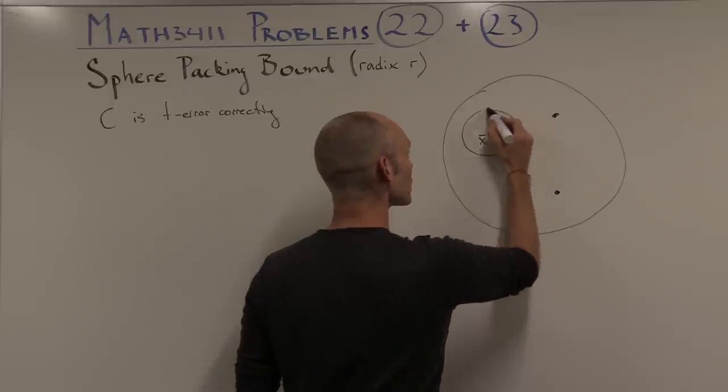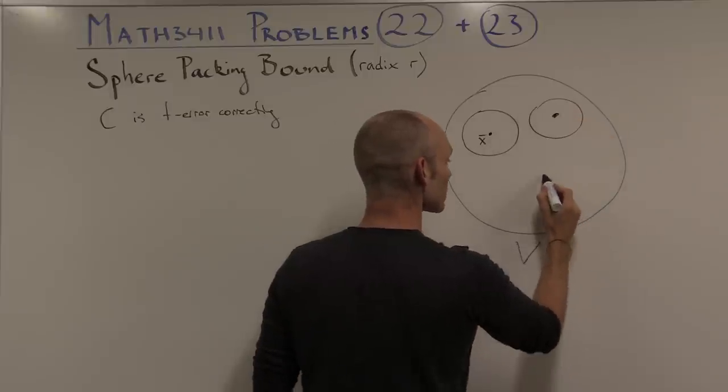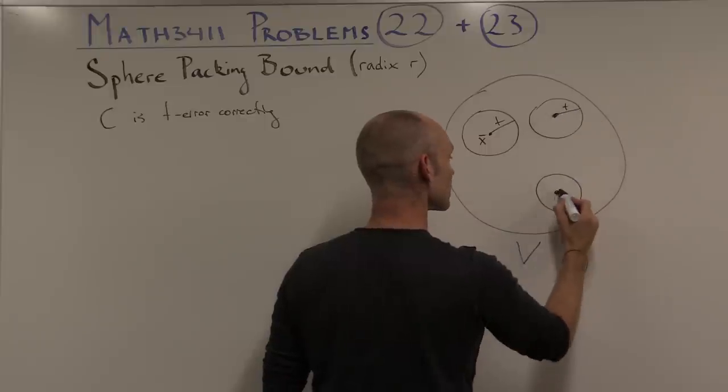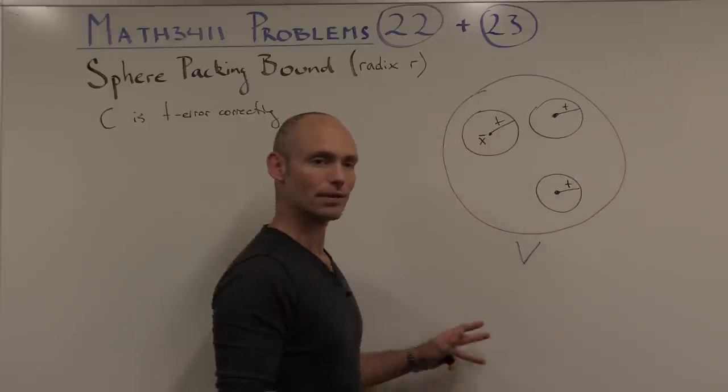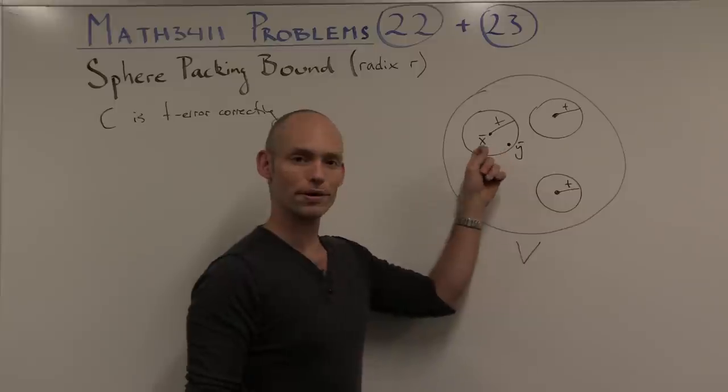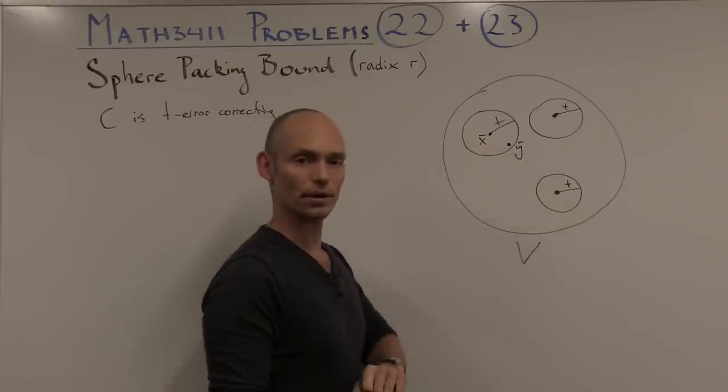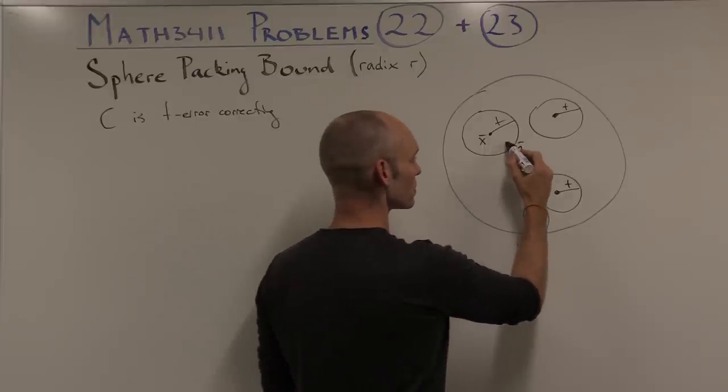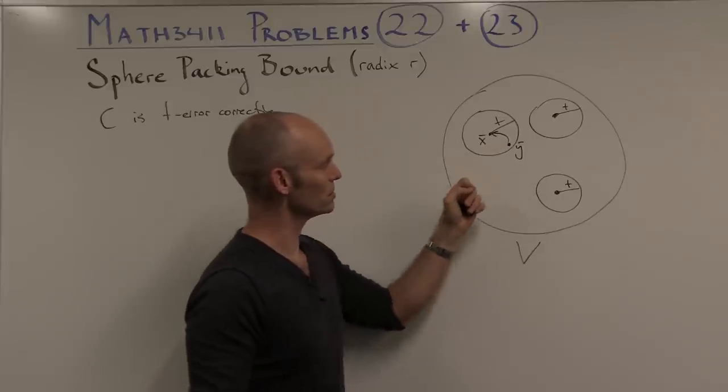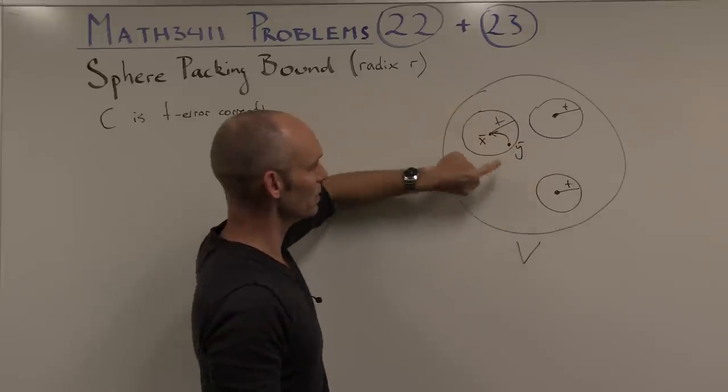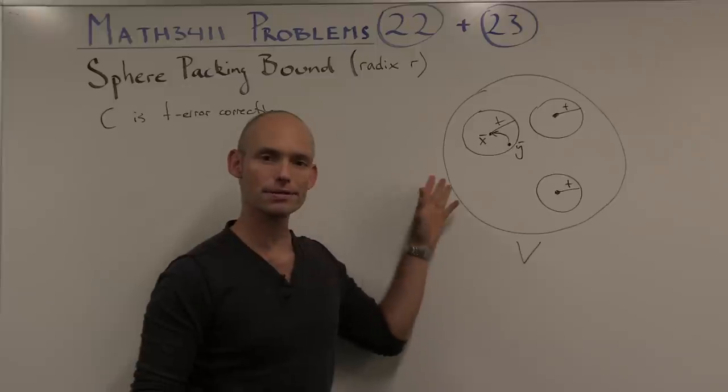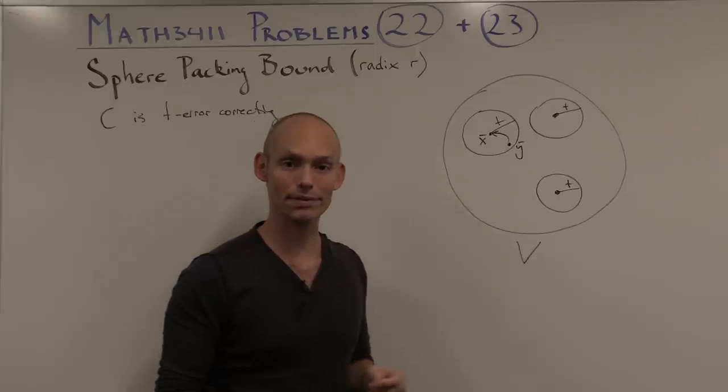If c is t error correcting, then we can draw little spheres around these code words, each of radius t. If we receive any word, for instance a word here, call it y, that isn't a code word but is within distance t to a code word, then we simply correct this word by replacing it with the code word that it's closest to.